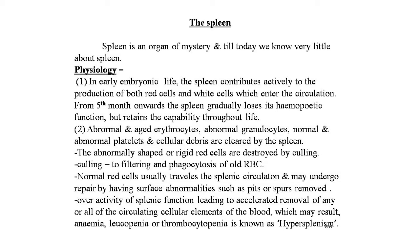The spleen is an organ of mystery and till today we know very little about it. In early embryonic life, the spleen contributes actively to the production of both red cells and white cells, which enter circulation from the 5th month onwards. The spleen gradually loses its hemopoietic function but retains this capability throughout life. Abnormal and aged erythrocytes, abnormal granulocytes, normal and abnormal platelets, and cellular debris are cleared by the spleen.